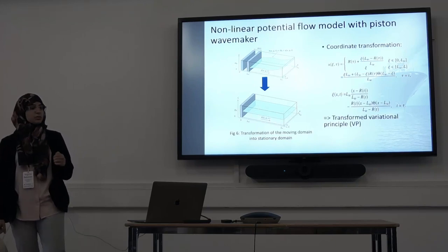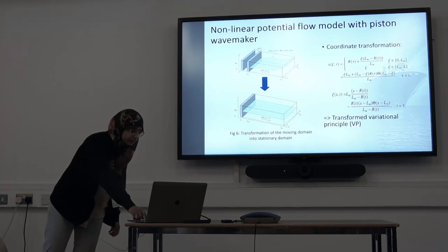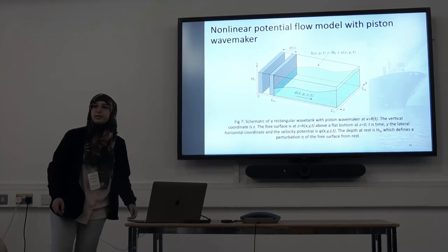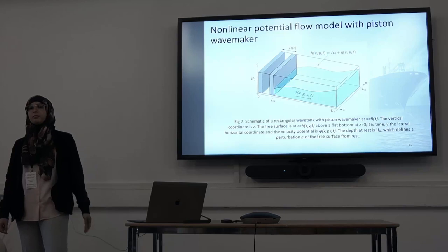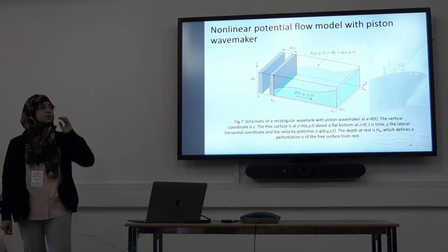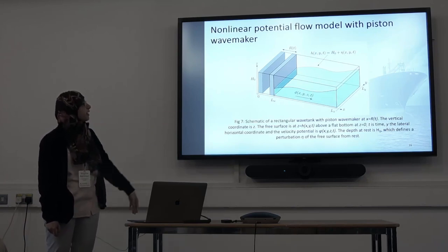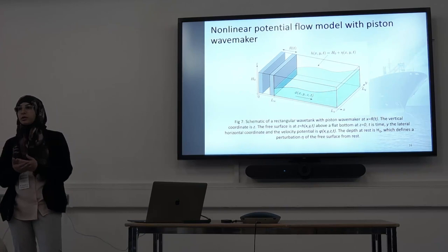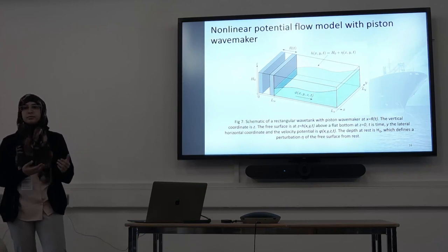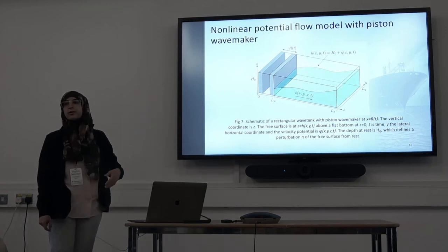We then discretize and implement this new variational principle. We then took a step forward and applied nonlinear potential flow equations. The key difference between shallow water and potential flow is that phi is now a function of x, y, z, and t, whereas in shallow water it was only a function of x, y, and t. So now we include the effect of depth. Again, it's a moving domain, so we use coordinate transformation to obtain a stationary domain.